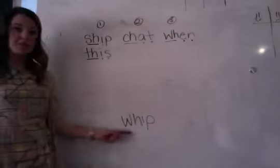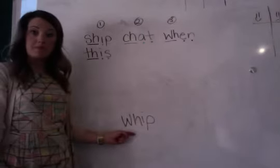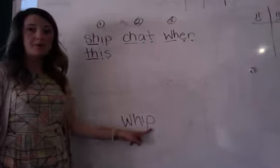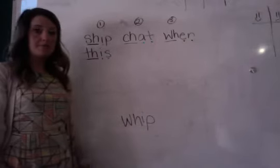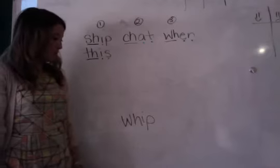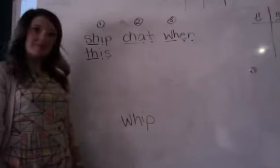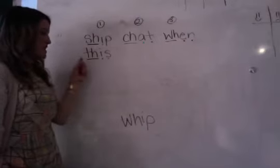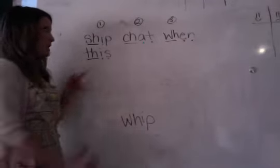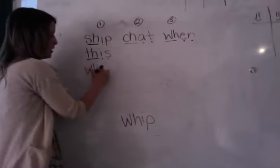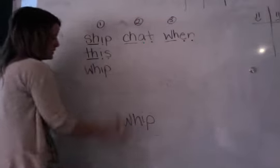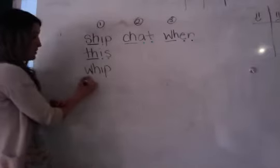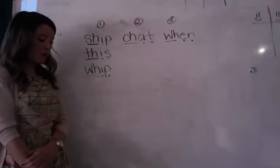Our next word is the word whip. Say whip. Now say the sounds for whip: W, I, P — whip. Where does whip go? Good — it goes under our first column, just like ship and this. Say and write whip under column one: W, I, P — whip. Now let's dot and dash: W, I, P — whip.